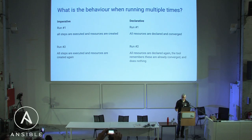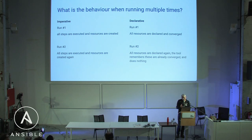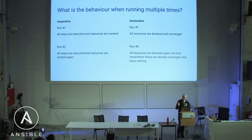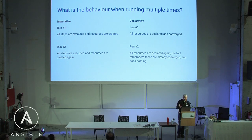Consider a number of subsequent runs of your infrastructure code. On the first run, both imperative and declarative tools will create all your resources. But on subsequent runs with an imperative tool, because you orchestrated the steps, your tool will create them again — and if the provider prevents creating the same resource twice, it will fail. With a declarative tool that knows what it already did, it takes that into account and skips what's already done.